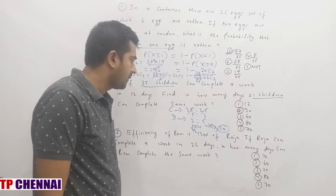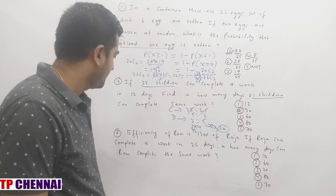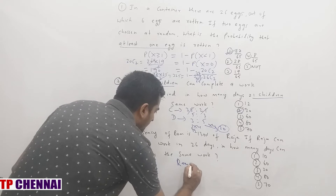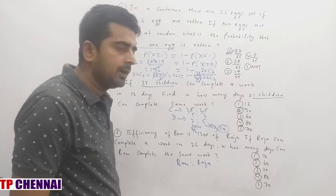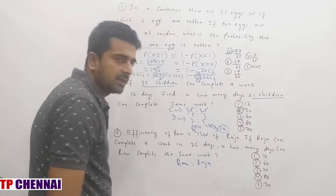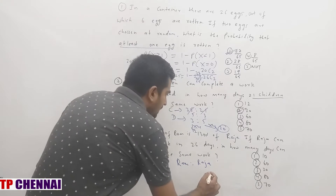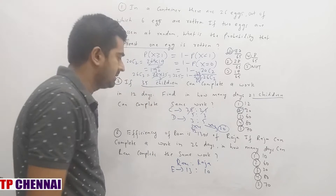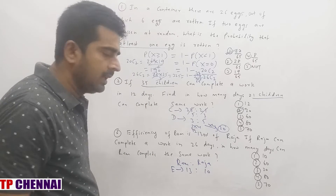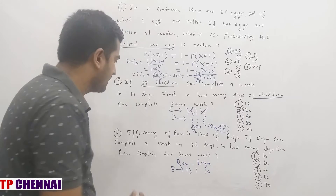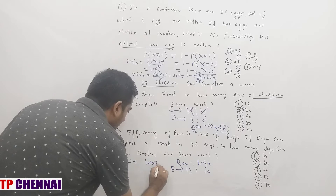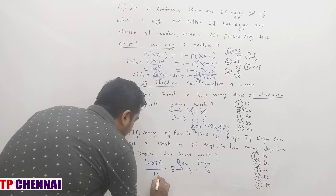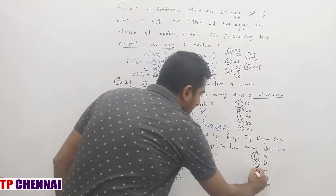Third question: Efficiency of RAM is 130% of RAJA. If RAJA can complete a work in 26 days, in how many days can RAM complete the same work? 130% fraction value is 13/10, so if RAJA is 10, RAM is 13. Efficiency ratio of RAM to RAJA is 13:10. Work = 10×26 = 260, divided by efficiency of RAM (13) = 20 days, which is the third option.